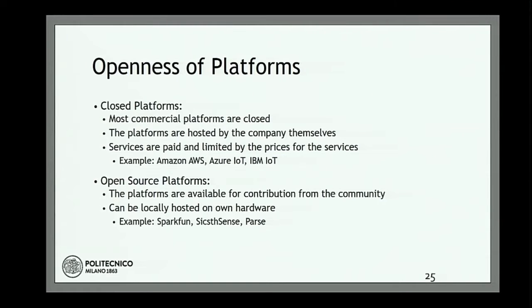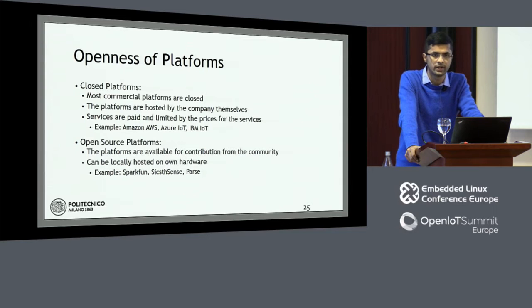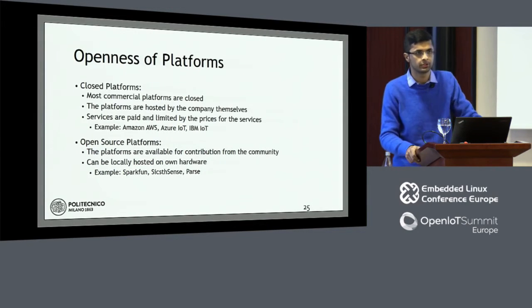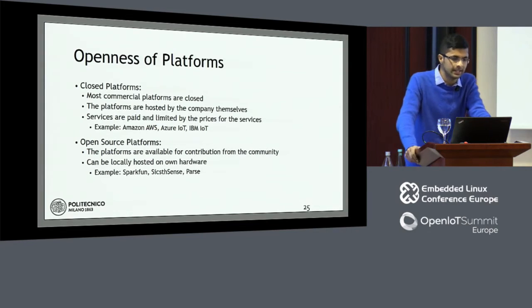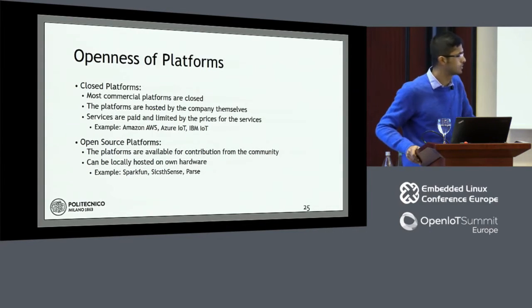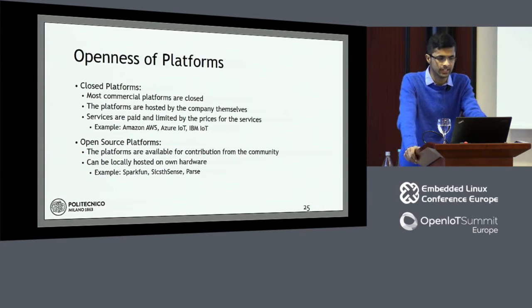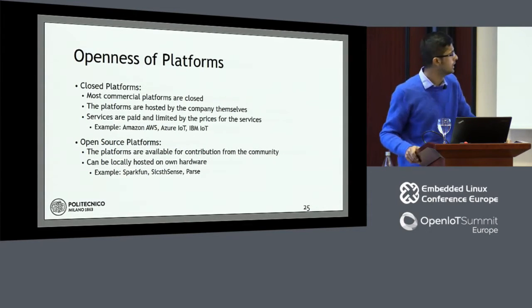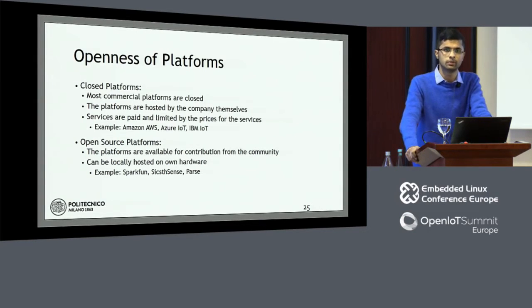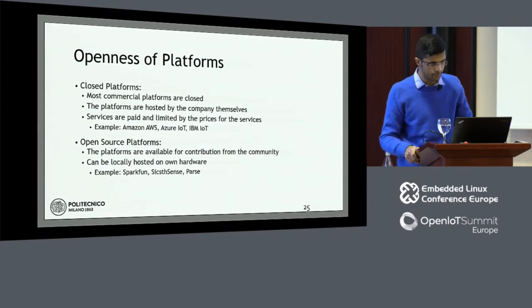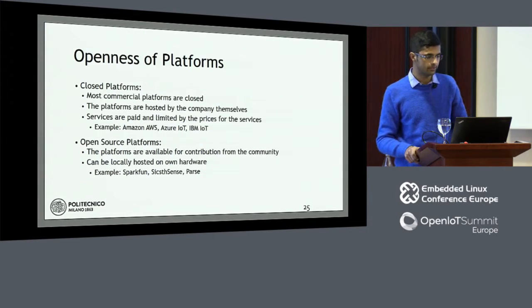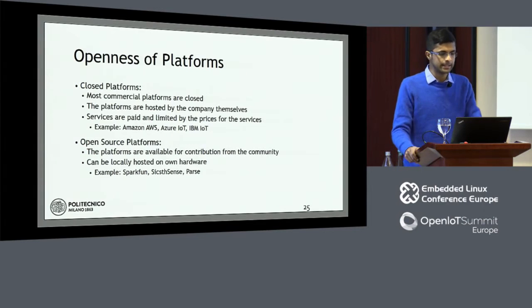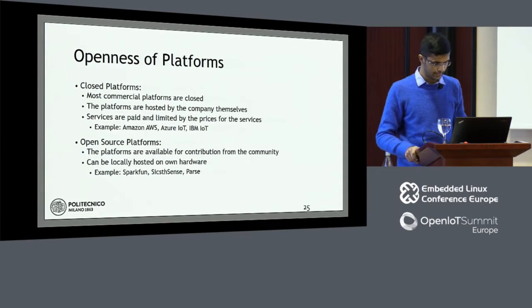Looking at the openness of cloud platforms, there are two flavors. Closed platforms are proprietary, hosted by the company, and offered as subscription services we pay for — examples include Amazon AWS IoT and Azure. Open source platforms are available for cloning or download; you can host them on your own server and modify them according to your application. Examples include SparkFun's Phant, Sixth Sense, and Parse.